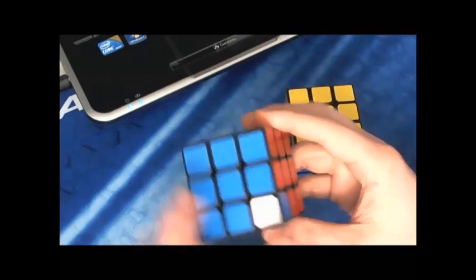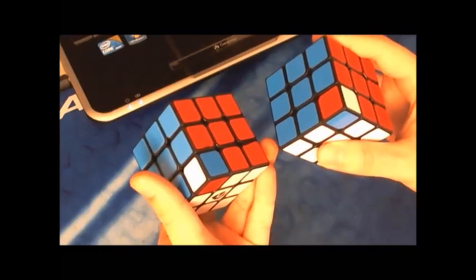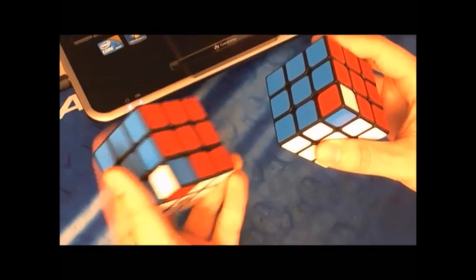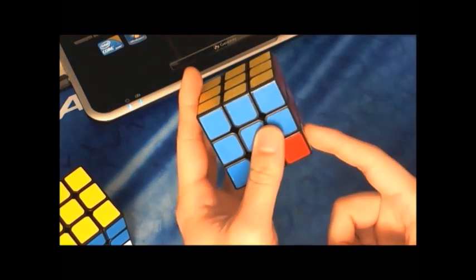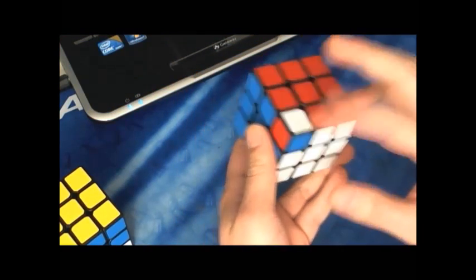This would be the I set. So this is how you differentiate between the I set and the IM set. The I set is on the left over here and the corner is facing towards you. And this IM set, the corner is facing away from you or to the side.